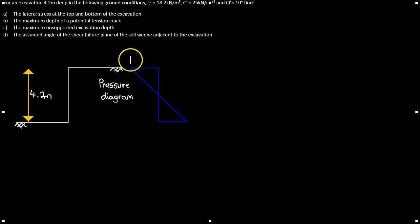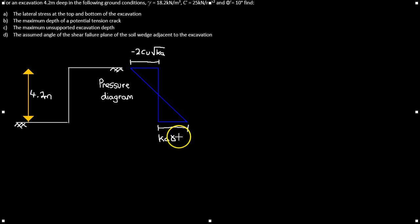We need to find the lateral stress at the top and bottom of the excavation. From a previous tutorial, the equation for stress at the top is minus 2 times the cohesion times the square root of kA, where kA is the coefficient of active lateral earth pressure. At the bottom, the lateral stress equals kA times gamma times the height minus 2 times cohesion times the square root of kA — in this case using a height of 4.2 meters.